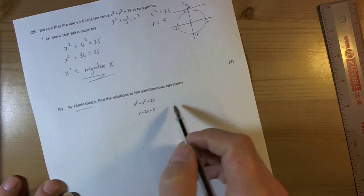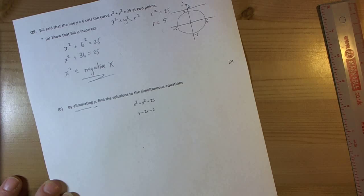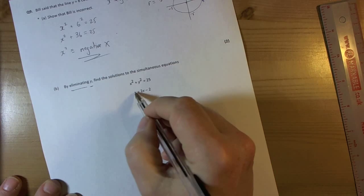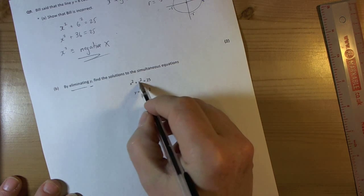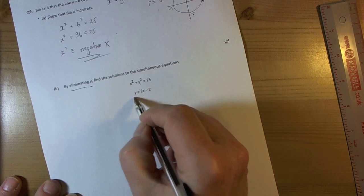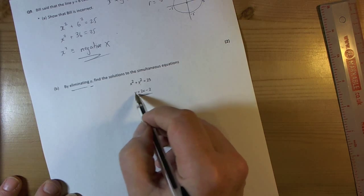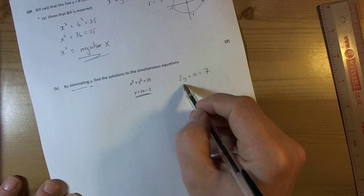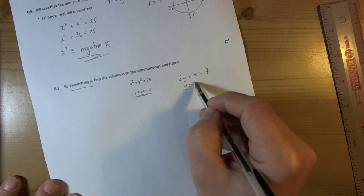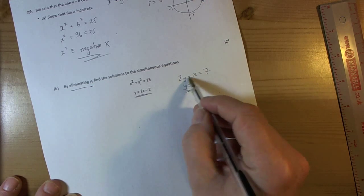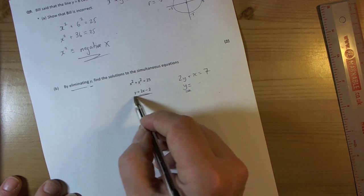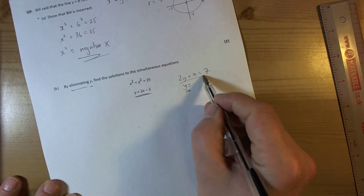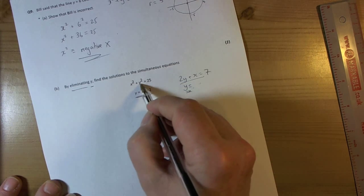The next part of the question says by eliminating y, so we've got clear here, eliminating y, find the solutions to these simultaneous equations. So elimination means that I want the equation to just have x's in it. I don't need the y there. So I'm replacing this y squared with the y value here. So sometimes with these it gives you maybe 2y plus x equals 7. We need to make y the subject. So when it says eliminate by y, we make anything they give us here y equals. This has been generous, they've already done the y equals bit for you. But just be aware that it could be something like this. And then you just make that become y equals and substitute it back into here.